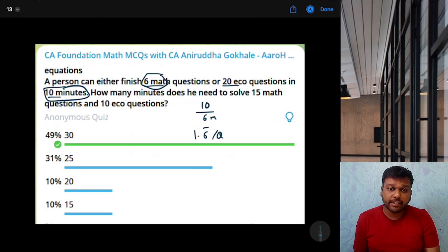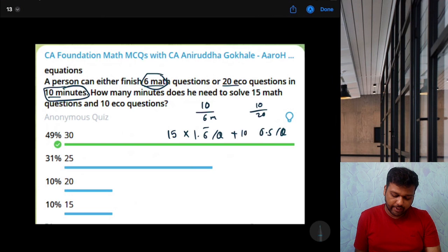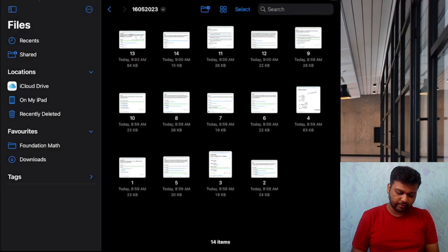So 1.666 per question of math. Similarly, how many minutes does he need per question of eco? 10 by 20, that is 0.5 per question of eco. Now he needs to solve 15 math questions. So 15 questions into 1.666 per question plus 10 eco questions into 0.5 per question. If you press MRC, you get 30, which is the correct answer.